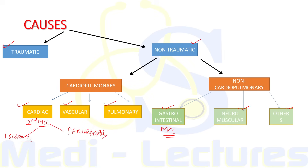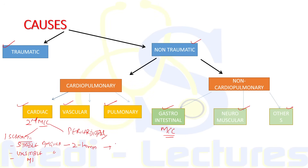Ischemic chest pain is further divided into stable angina, unstable angina, and MI — which can be non-ST elevation or ST elevation MI. Stable angina typically has a duration of 2 to 10 minutes and is relieved by rest and nitrates. MI has a duration of more than 30 minutes, and unstable angina is around 10 to 30 minutes. MI pain is usually not responsive to rest or nitrate therapy.